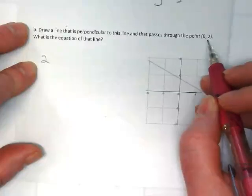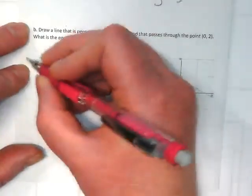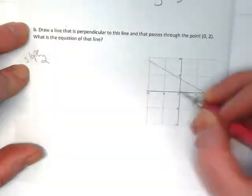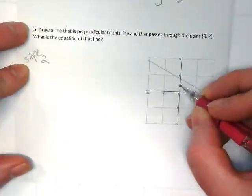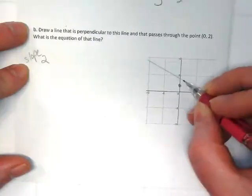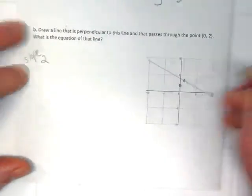And it also says that it's passing through the point 0 comma 2. So I'm going to go ahead and graph that. And if my slope is 2, I'm going to go up 2 and over 1. And there is where my two lines are going to cross.